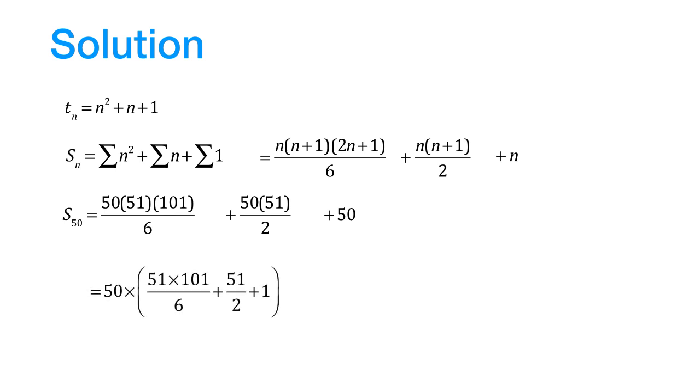Now, the number inside the brackets can be simplified and it turns out to be equal to 885. And therefore, the overall sum is 50 times 885.